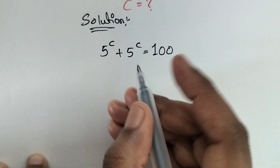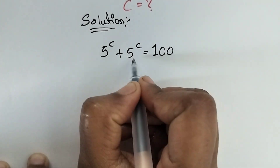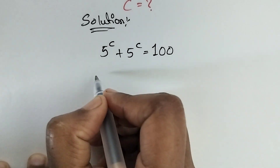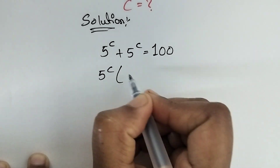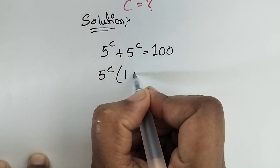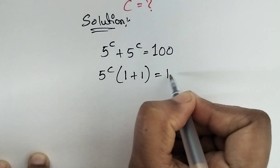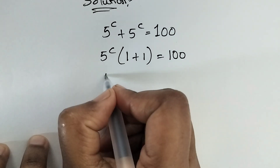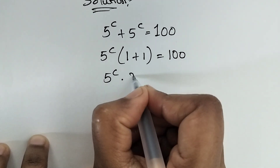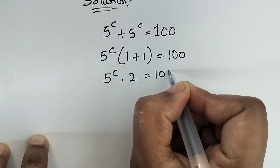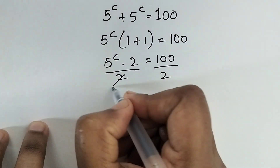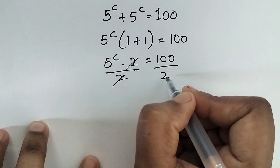In these two terms we have a common factor, that is 5 power c, so we are taking out 5 power c as a common. The left over numbers are 1 plus 1, so 5 power c times (1 plus 1), which is equal to 2, is equal to 100.